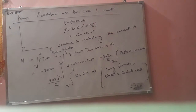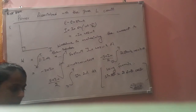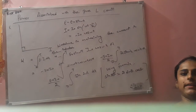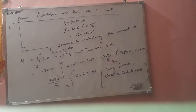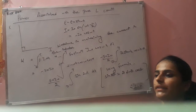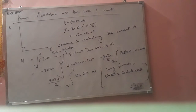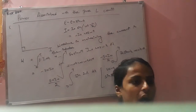Now, what is the work done in maintaining the current in the inductor? Some work is done by the source to increase the current from 0 to the maximum value I-naught. This work done is called energy stored in the inductor, and this formula is called half L I-naught squared.